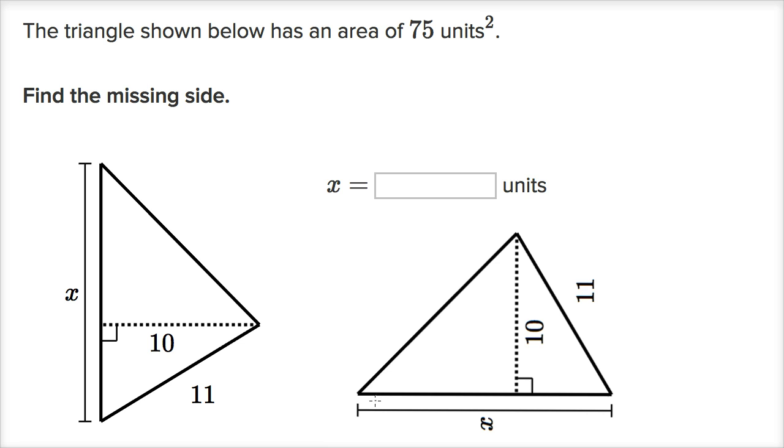And now it might be a little bit clearer what we're talking about. This length x that we wanna figure out, this is our base, and they give us our height, and they give us our area. And we know how base, height, and area relate for a triangle. We know that area is equal to 1/2 times the base times the height.